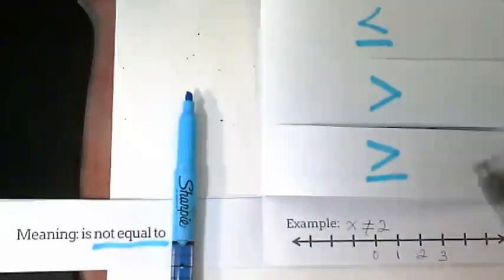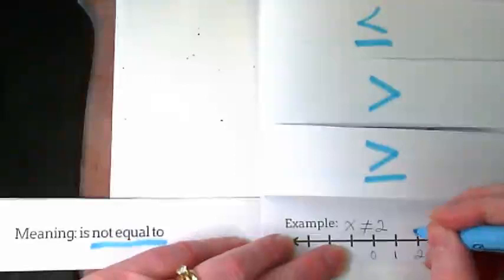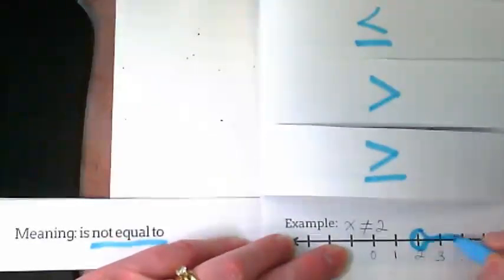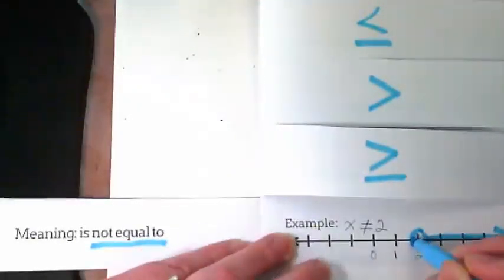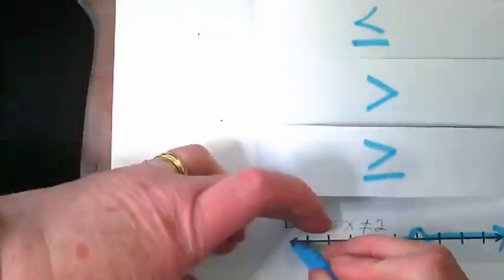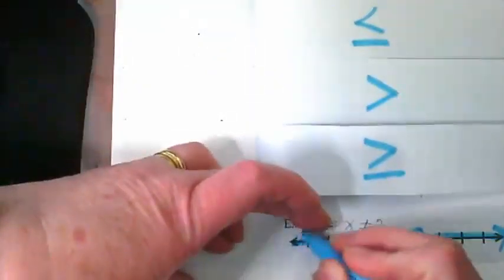But how would we show that on a graph? We're going to go to the right and the left. But the circle is not filled in because we're basically saying every other number that exists in the world except 2 works.